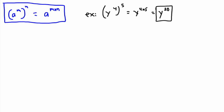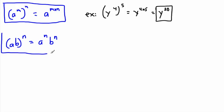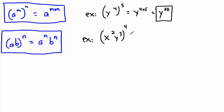We can also split things. If we have a times b, all to the power of n, that's the same as a to the power of n times b to the power of n. That one's fairly commonly used. Here's a more complicated example combining rules: x squared times y cubed, all to the power of four. Splitting it gives us x squared to the fourth times y cubed to the fourth.